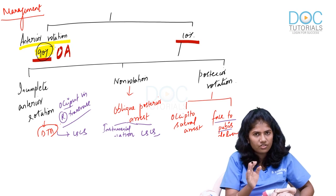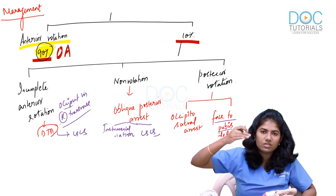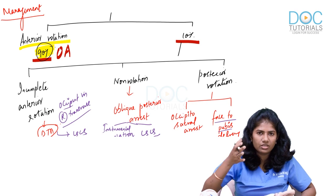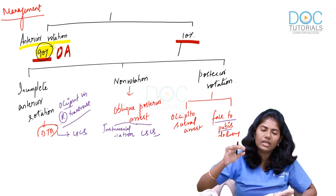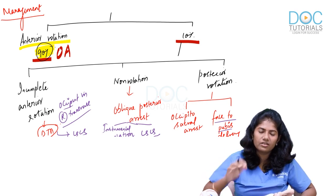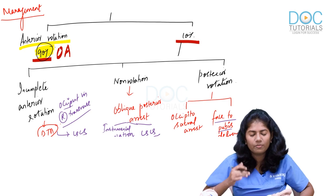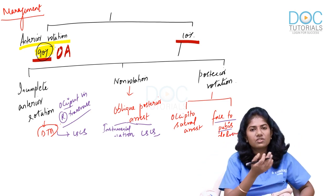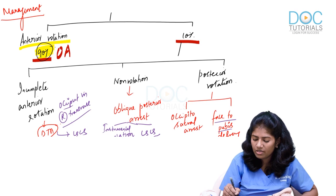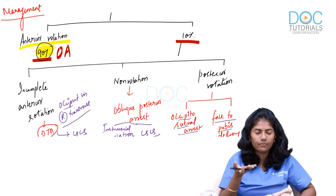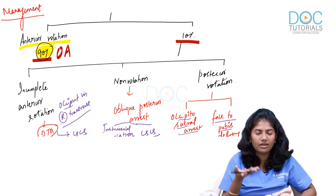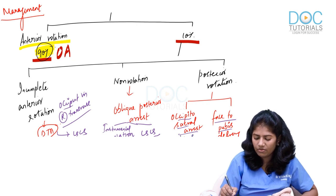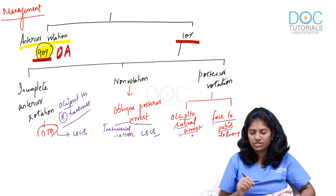Summary of fates: posterior rotation → face-to-pubis delivery; anterior rotation → occipito-anterior normal delivery; short anterior rotation → deep transverse arrest; non-rotation → oblique posterior arrest. If the fetus reaches face-to-pubis position but still doesn't deliver, it is called occipito-sacral arrest (blocked at the direct posterior position), and caesarean section is performed.